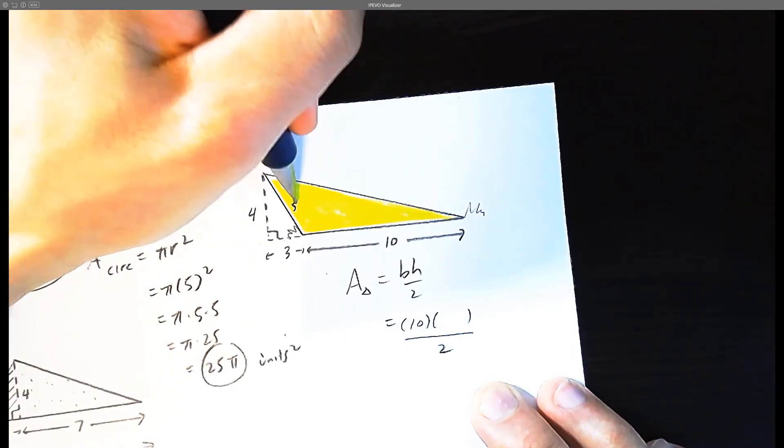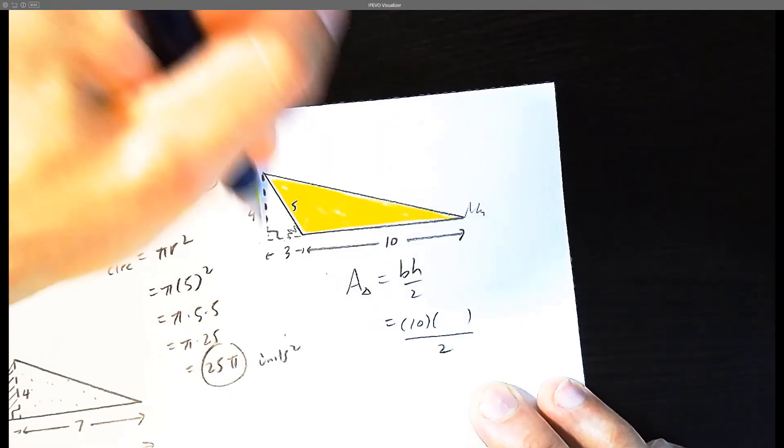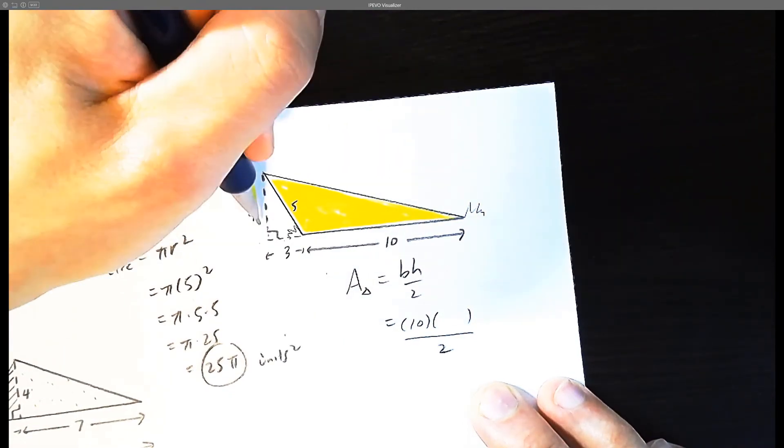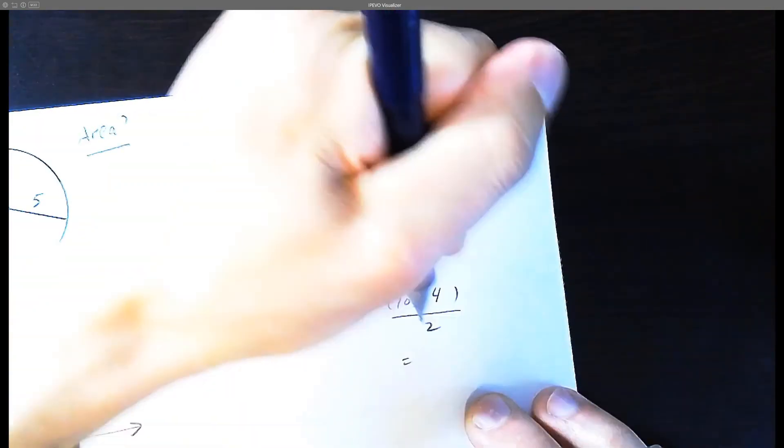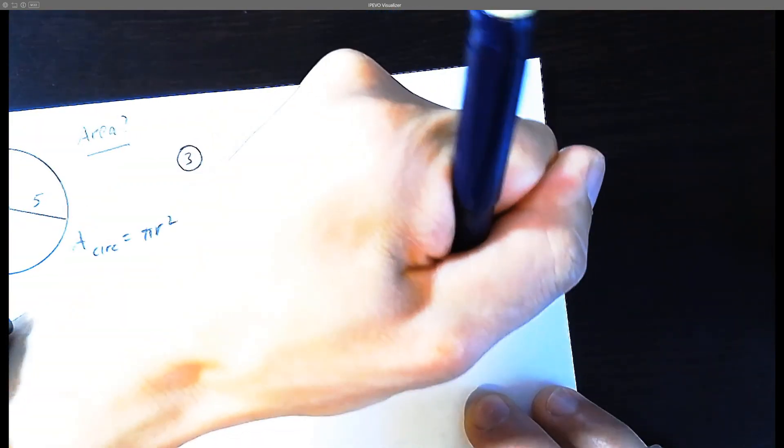So if this was a 3, 4, 5, the actual perpendicular height, even though it's not touching the triangle, is going to be 4. So again, the area is going to be 10 times 4, which is 40, divide by 2, which is 20.